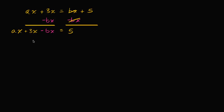Now what I can do is factor an x out of the left-hand side, out of all of the terms. So I can rewrite this as x times — well, ax divided by x is a, 3x divided by x is 3, and negative bx divided by x is just going to be negative b. And that's all going to be equal to five.